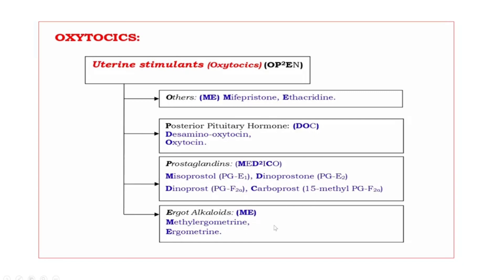Next, the last one — Ergot Alkaloids. The drugs are M, E: M means Methylergometrine, E means Ergometrine.